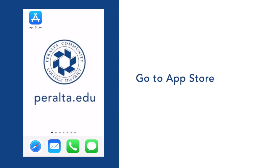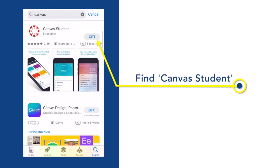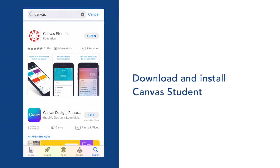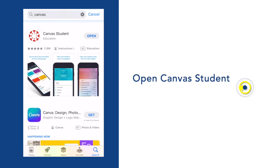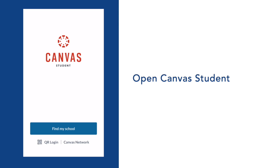Go to your App Store and find the Canvas Student app. Download and install the app onto your phone. From here, you can either open it directly from the App Store or exit out of the App Store and locate it on your home screen. Just click onto the app to open it.